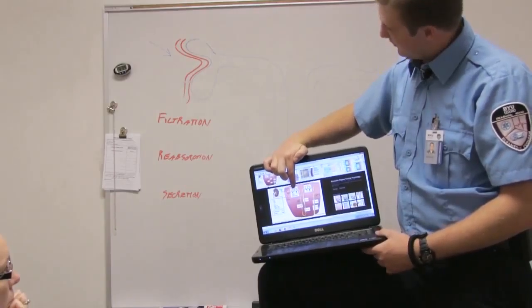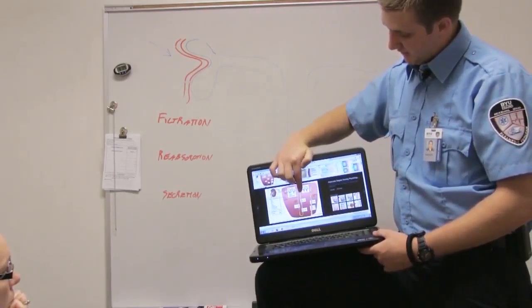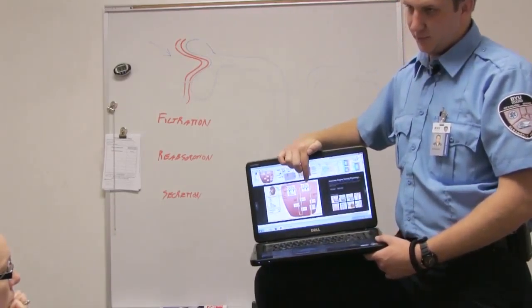So here you have your proximal convoluted tubule, the loop of Henle, and the distal convoluted tubule.